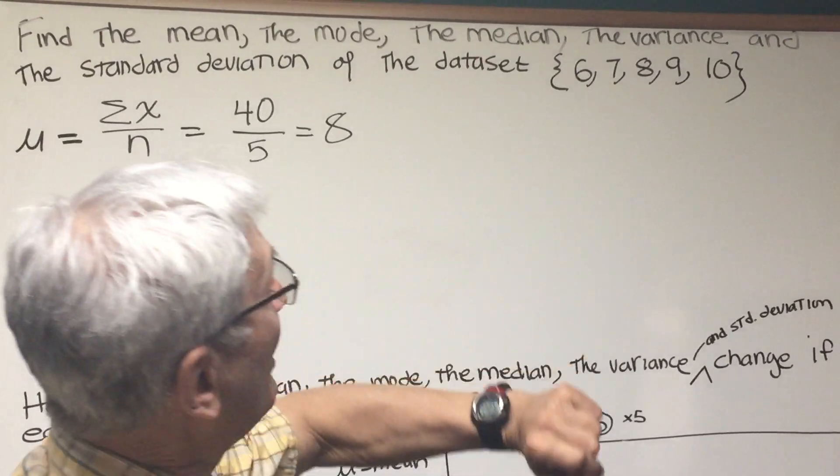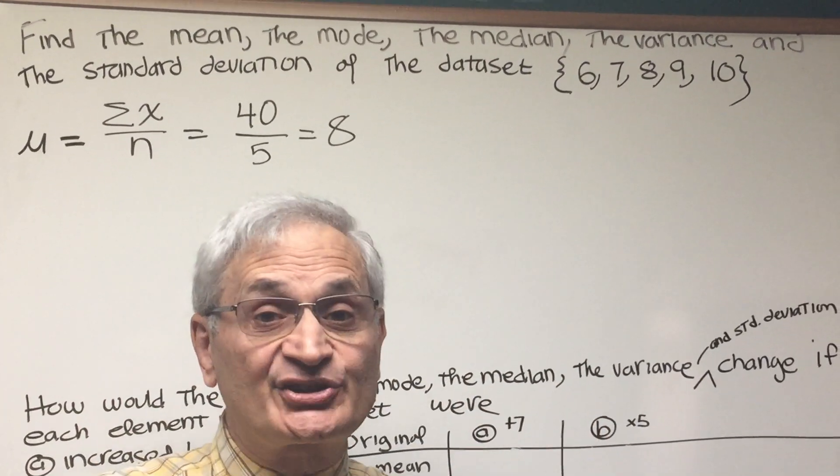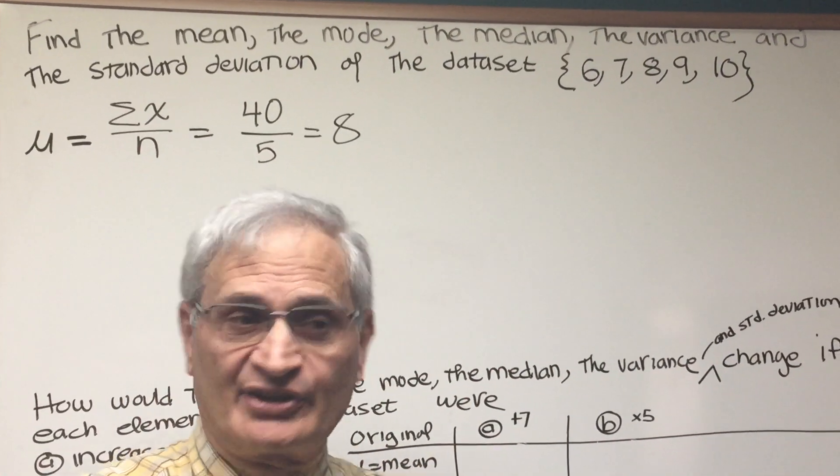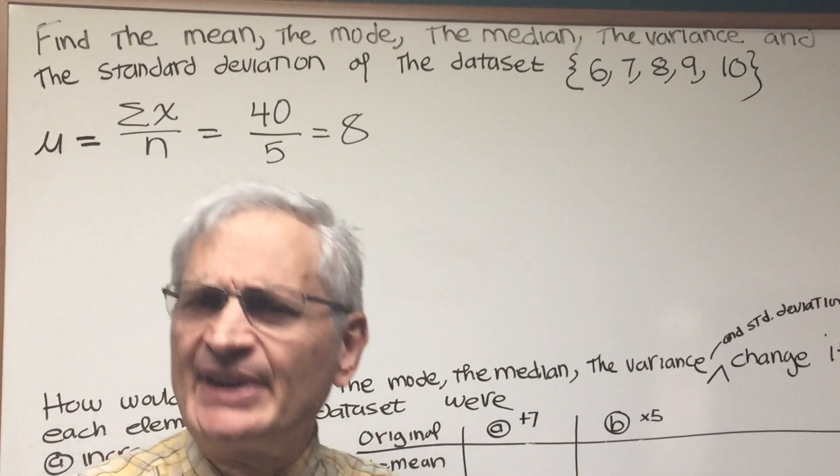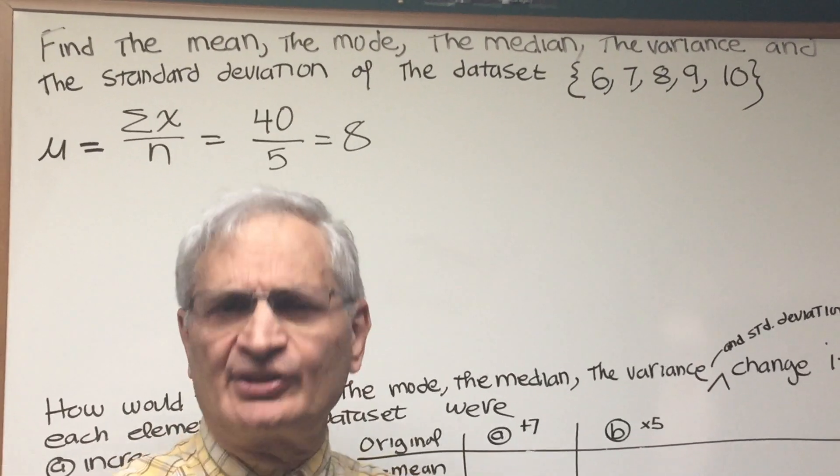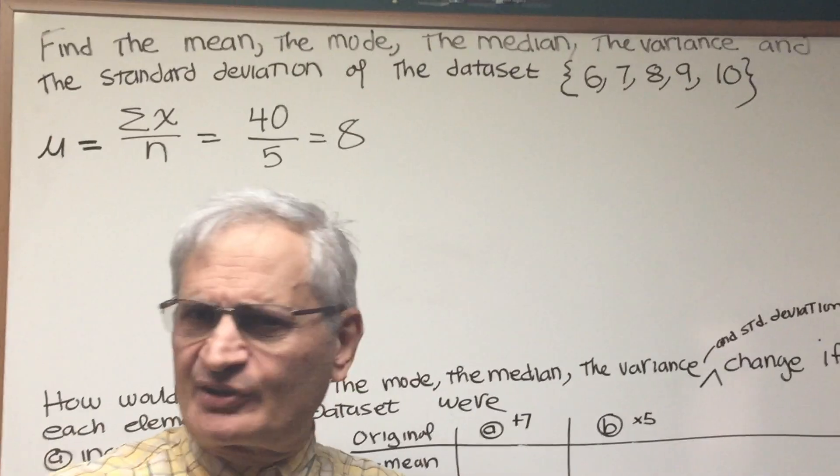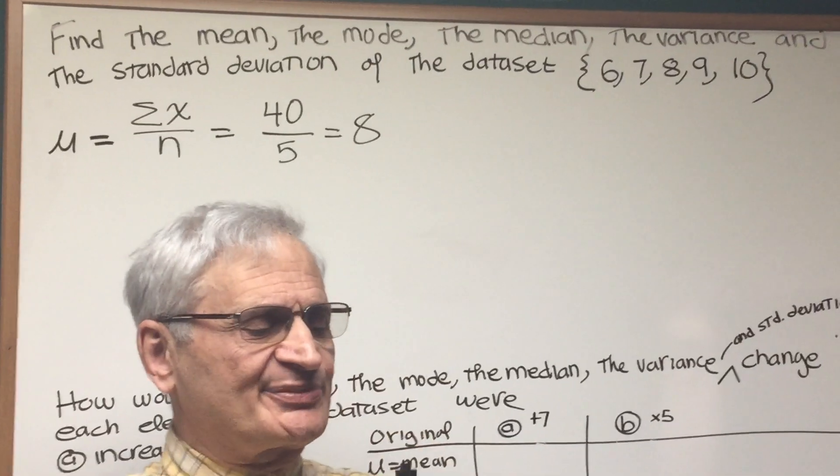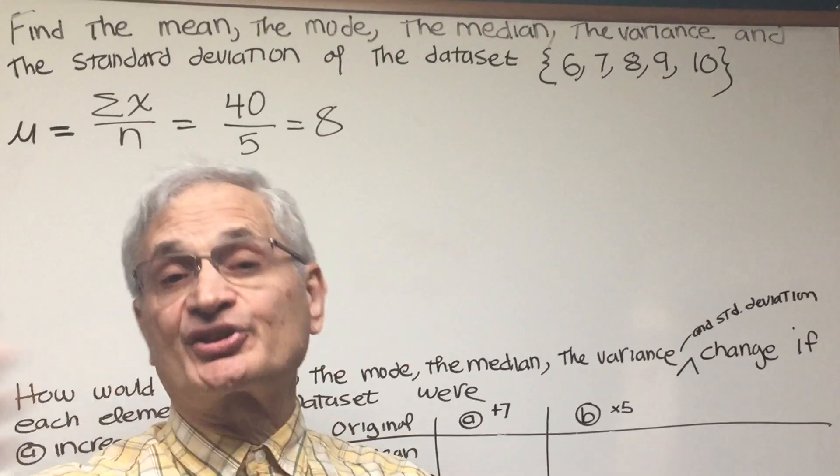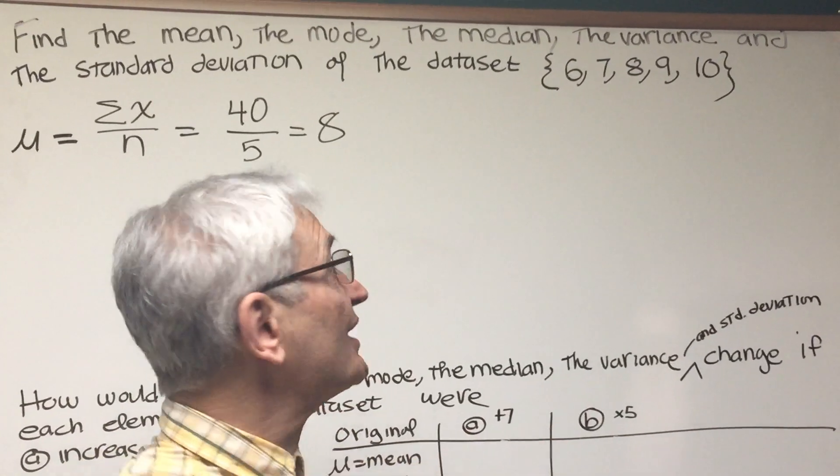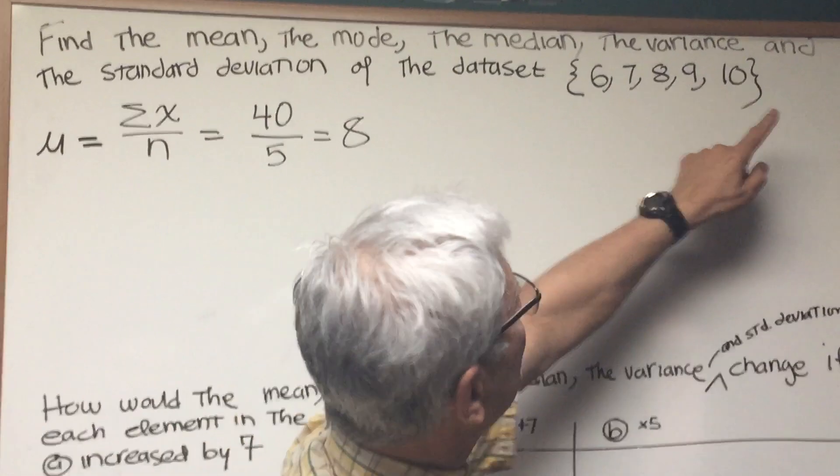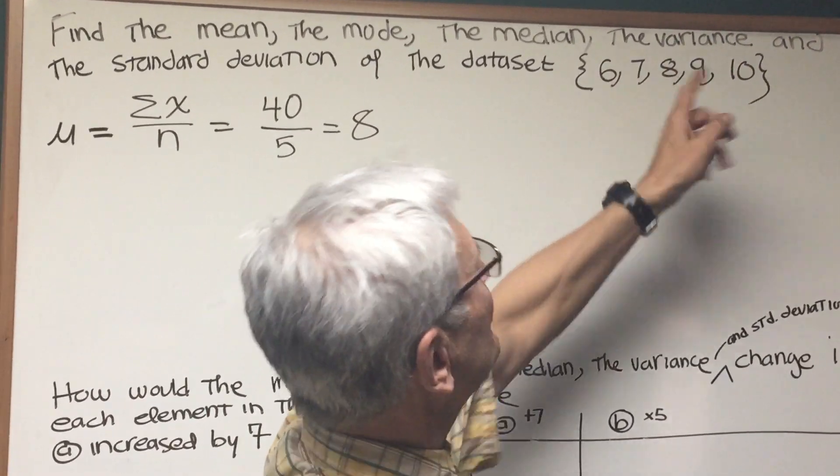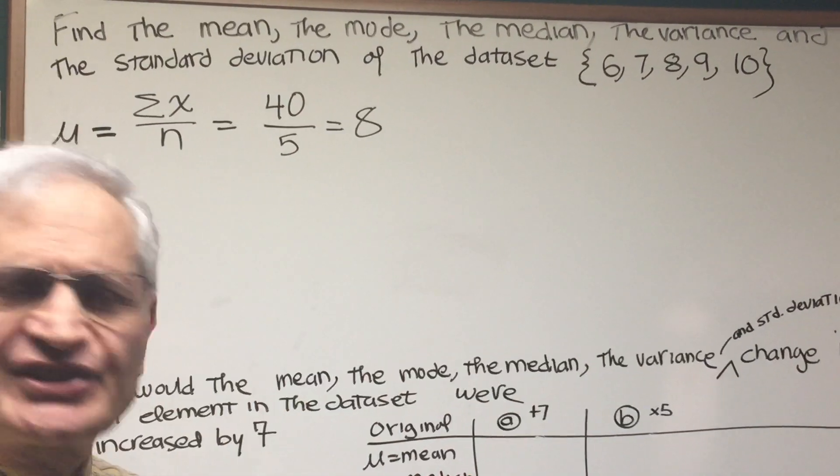The median of a data set is the number such that there are as many scores above that median as there are below that median. You've heard of expressions like the median income or the median cost of a house in a neighborhood. Looking at this data set, it's pretty clear that 8 lies right in the middle. There are two above, two below. So that's the score that lies exactly in the middle.